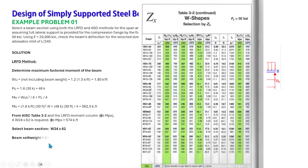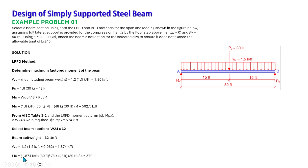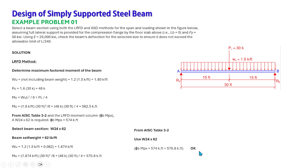We now include the self-weight of the beam, which is 62 pounds per foot. The updated factored uniform load is 1.2 × (1.5 + 0.062) = 1.874 kips per foot. The revised moment is 1.874 × 30² / 8 + 48 × 30 / 4 = 570.8 kip-feet.